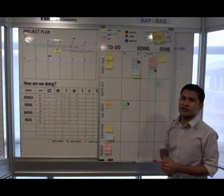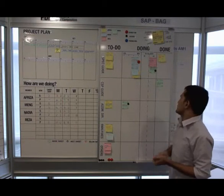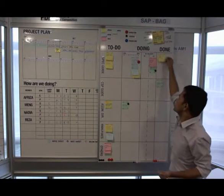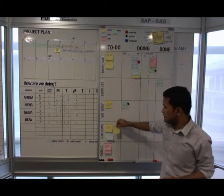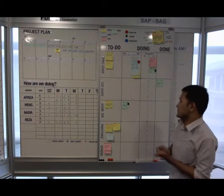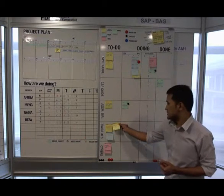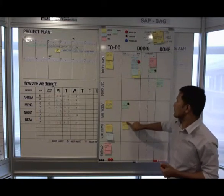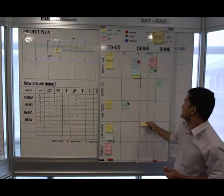What if our customer comes back to us with some changes or rework? We're going to move the project that has been completed previously but needs to be reworked to the rework and fixes row. When we start to work on that reworked project, the same process will happen again — we move from doing to validate, and lastly, done.